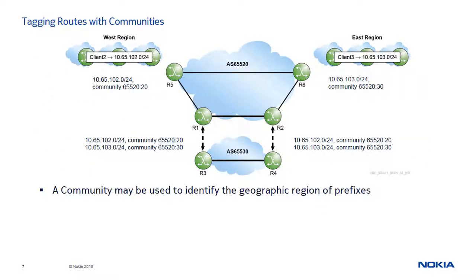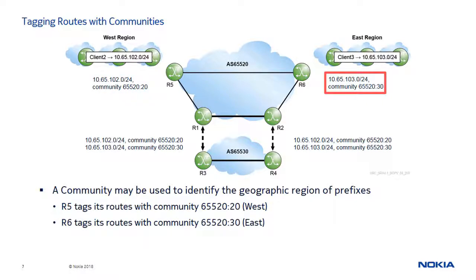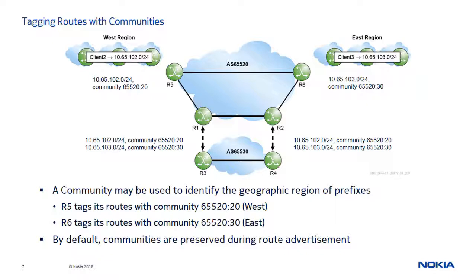A community is used to indicate that a route has a specific characteristic. In this example, this characteristic is the geographic region. Router R5 adds the community 65520:20 to indicate that the prefix 10.65.102.0/24 is a network originating in the West region. And router R6 adds the community 65520:30 to indicate that the prefix 10.65.103.0/24 is a network originating in the East region. Because the community attribute is transitive, communities stay with the route unless explicitly removed. In this example, R1 and R2 pass these communities to AS65530.